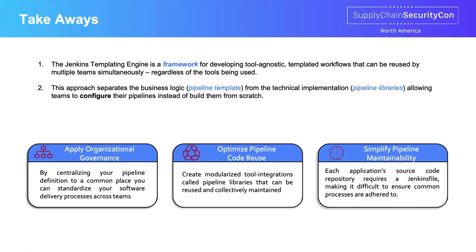Finally, through the Jenkins Templating Engine, you can apply organizational governance by defining reusable templates that incorporate security while making sure developers can't bypass checks. You can optimize pipeline code reuse through plug-and-play libraries in a scalable way, and simplify pipeline maintainability. It's a lot easier to manage a centralized pipeline template with plug-and-play pipeline libraries than to maintain copied, pasted, and tweaked pipeline definitions across your entire organization. I hope this talk helped you understand how the Jenkins Templating Engine serves a role in governing your DevSecOps pipeline as part of your supply chain security. Feel free to check out the repository and reach out if you have any questions. Thank you.